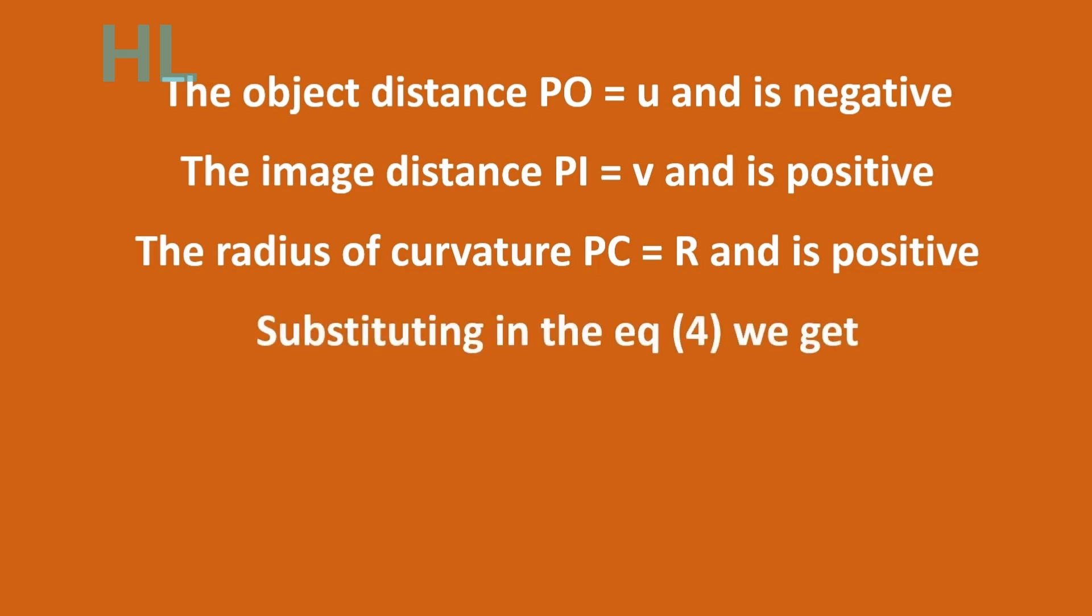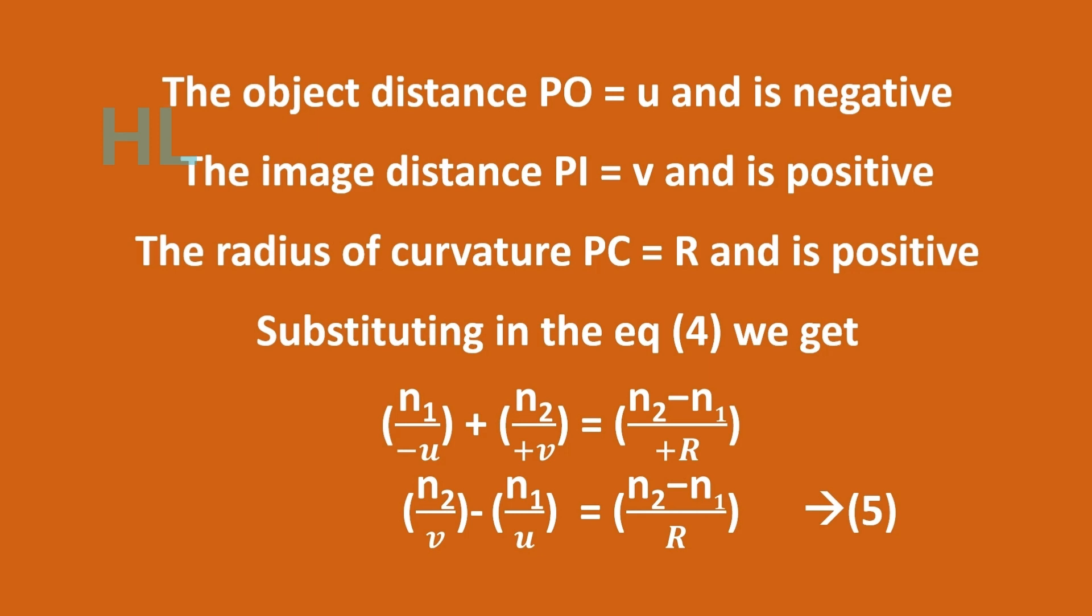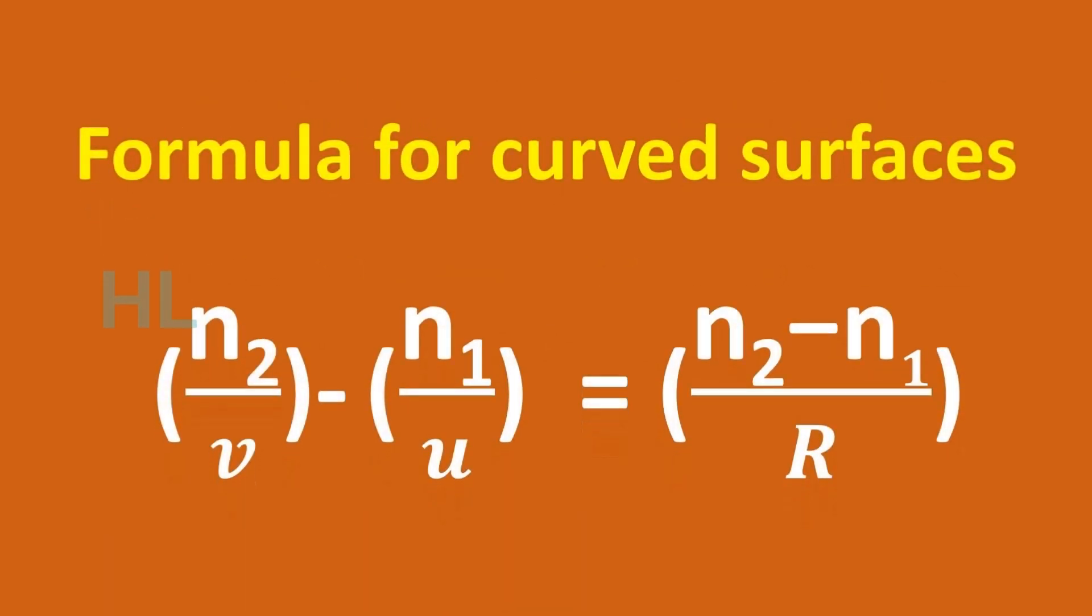Substituting in equation number 4, we get N1 by minus U plus N2 by plus V equals N2 minus N1 by plus R. So finally, formula for curved surface: N2 by V minus N1 by U equals N2 minus N1 by R. This is the formula for curved surfaces.